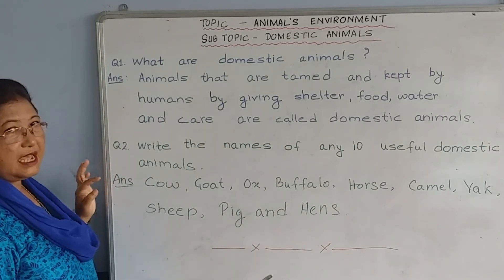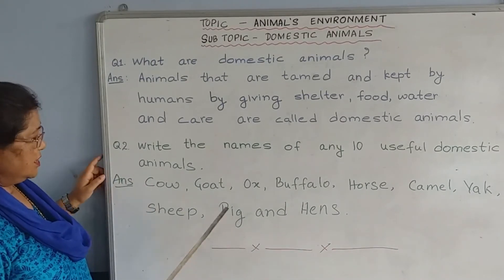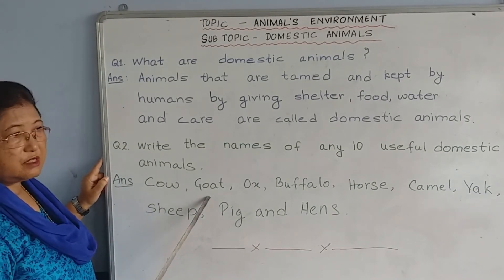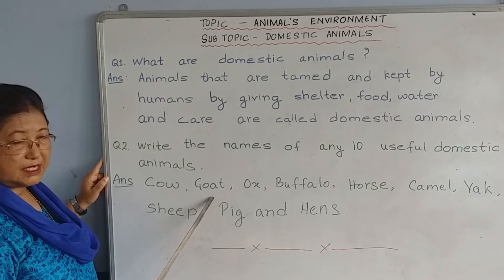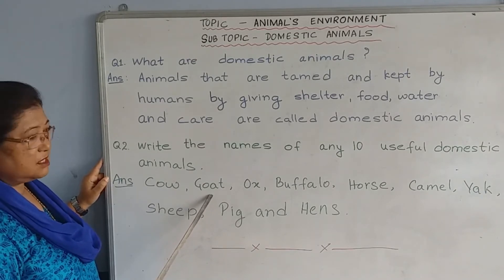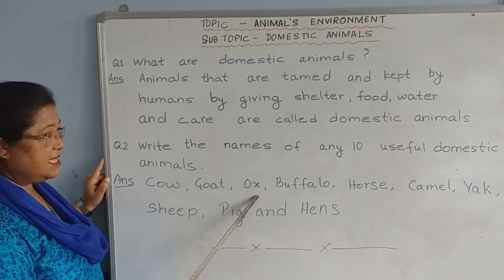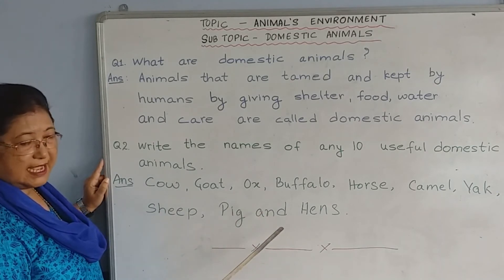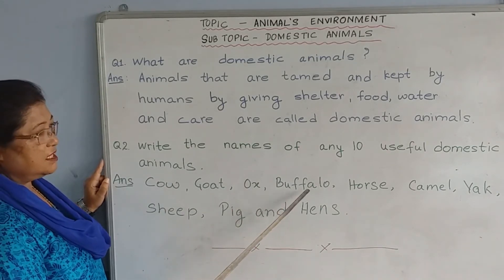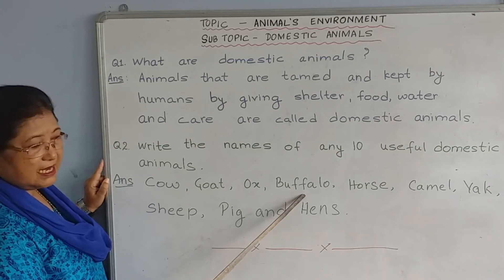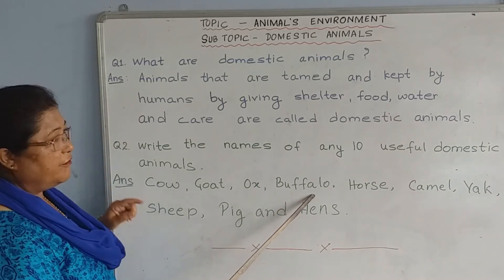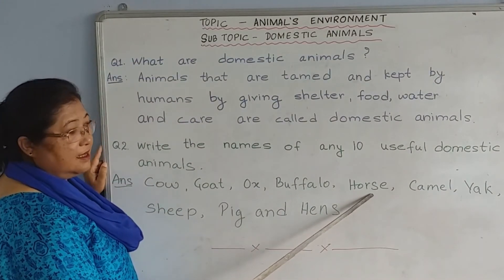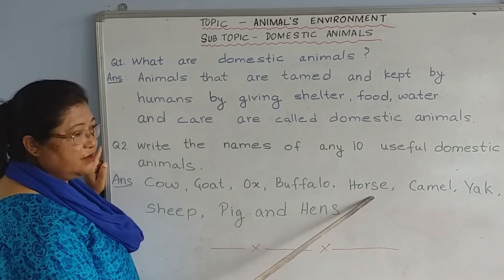These animals are very useful to us. Cow gives us milk. Goat also gives us milk, and people use goat for meat as well. Ox is used for meat, and also helps to plough the field and carry loads. Buffalo gives us milk, helps carry loads, and also ploughs the field. Horse helps carry loads, people ride on horses, and in some places they also drink horse milk.